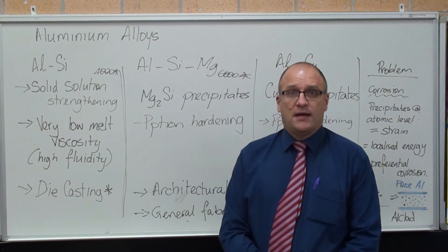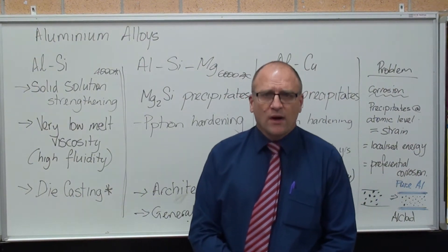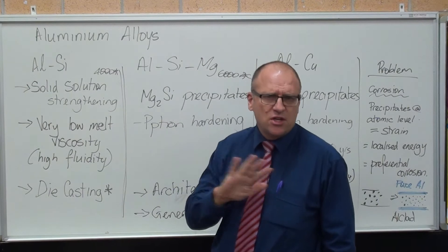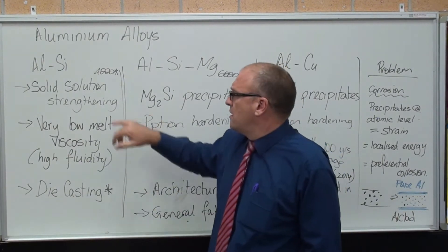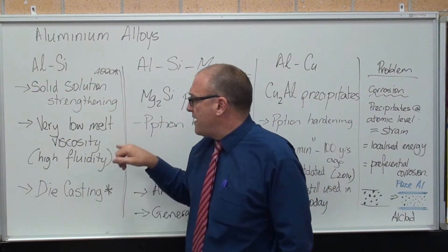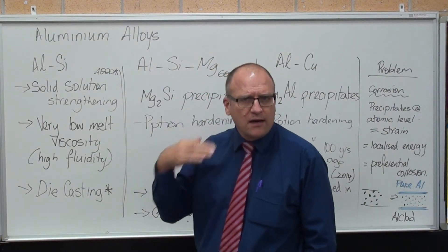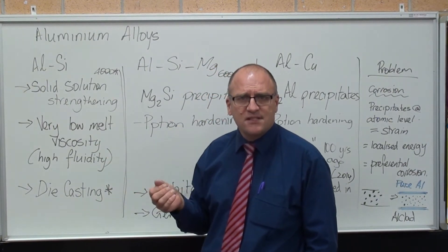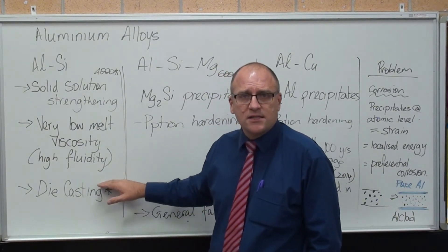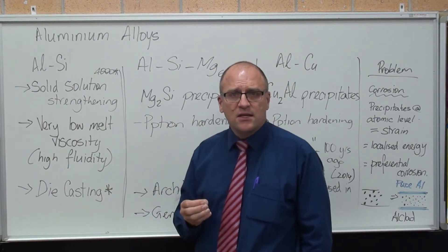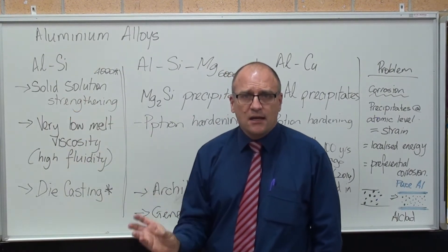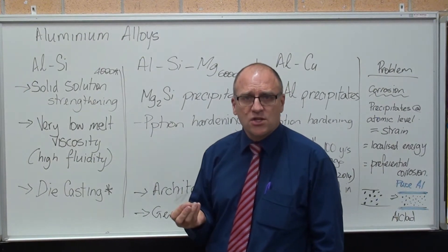The aeronautical syllabus talks about aluminium alloys, only one of which is used in aircraft. Aluminium silicon — the 4000 series — gets its strength through solid solution strengthening. Their big advantage is that when molten, they are as runny as water: very low viscosity or high fluidity, which makes them perfect for die-casting. Matchbox cars or anything that needs to be die-cast is usually made from a 4000 series alloy, and they are used a lot in car manufacturing.